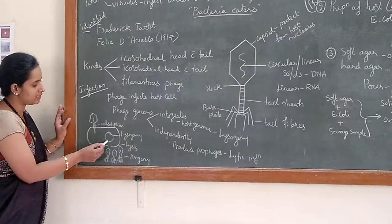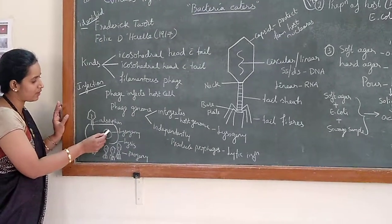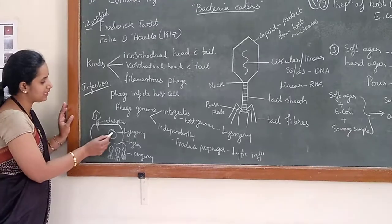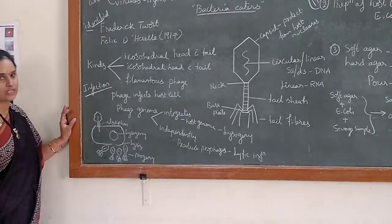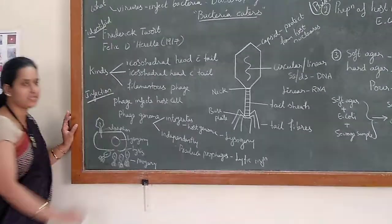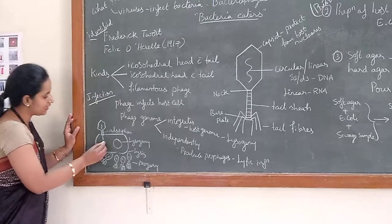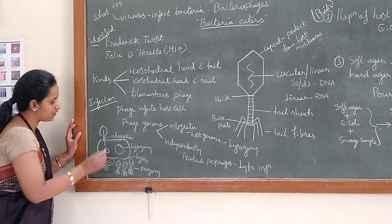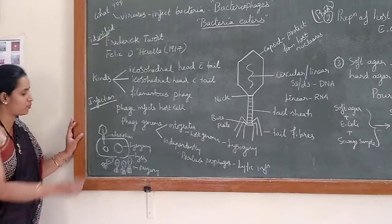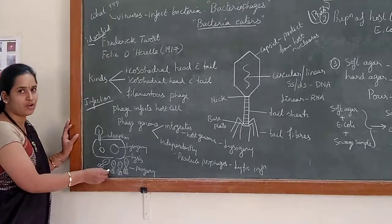Either it will integrate - this is the bacterial genome and this is the viral genome. It has been integrated into the host genome. So this type of infection is lysogenic, or it can independently replicate inside the host cell to produce the progeny or the prophages.